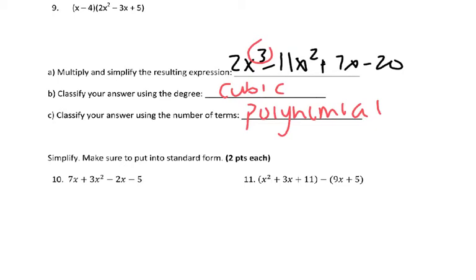The bottom part, all you're doing is simplifying. So you're combining like terms. 3x squared is by itself. Your 7x and negative 2x add to give you 5x. And all you're left with is a negative 5.